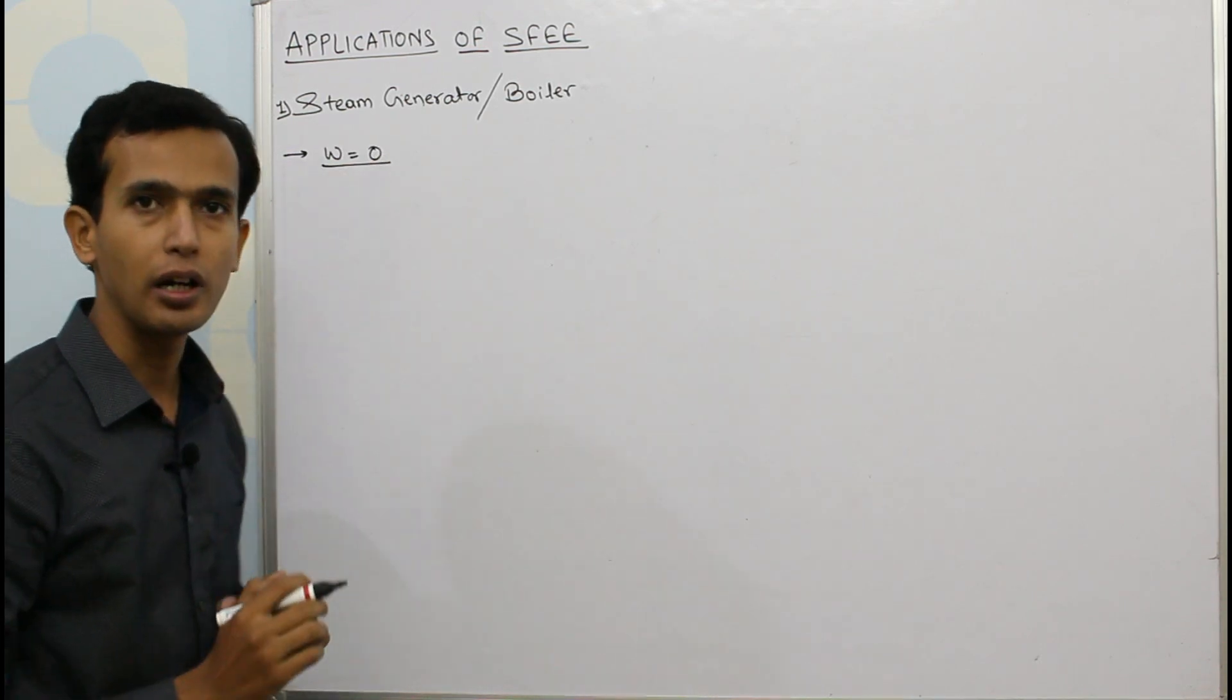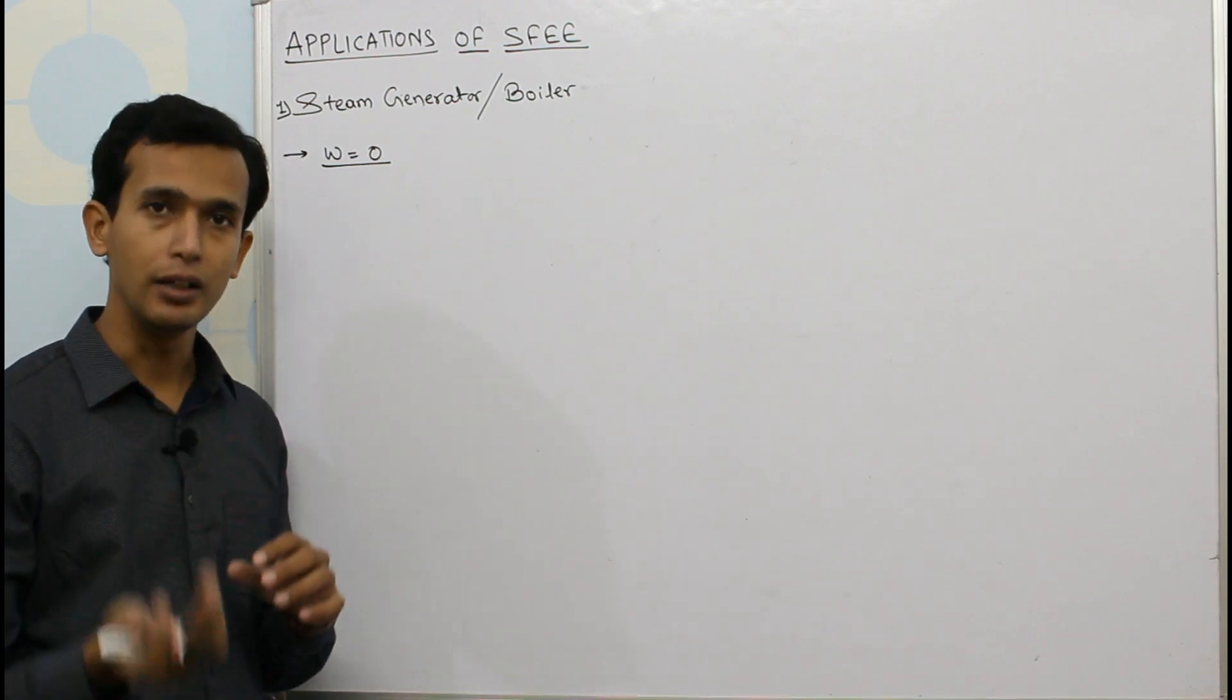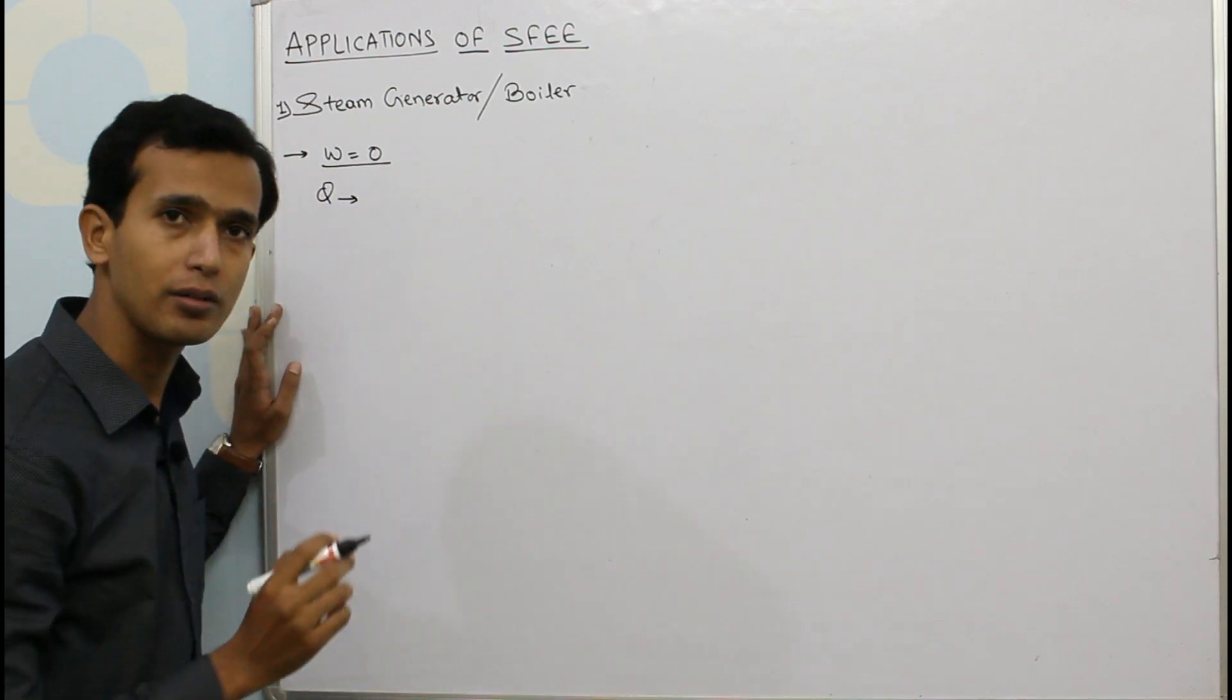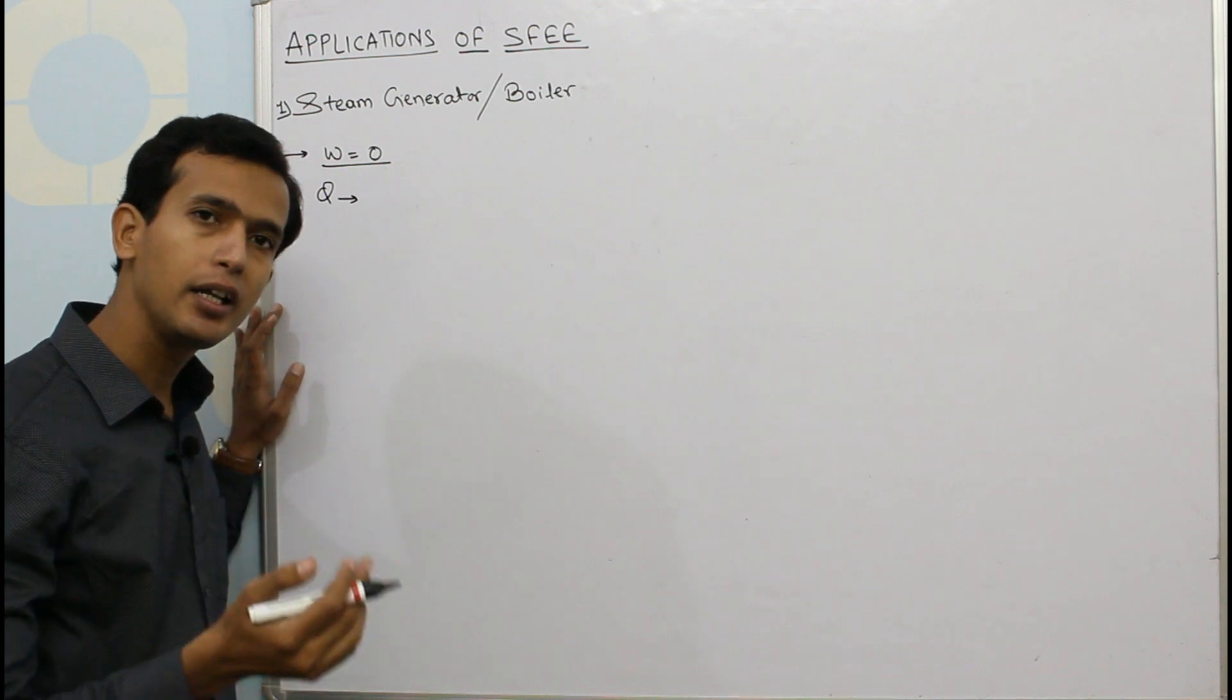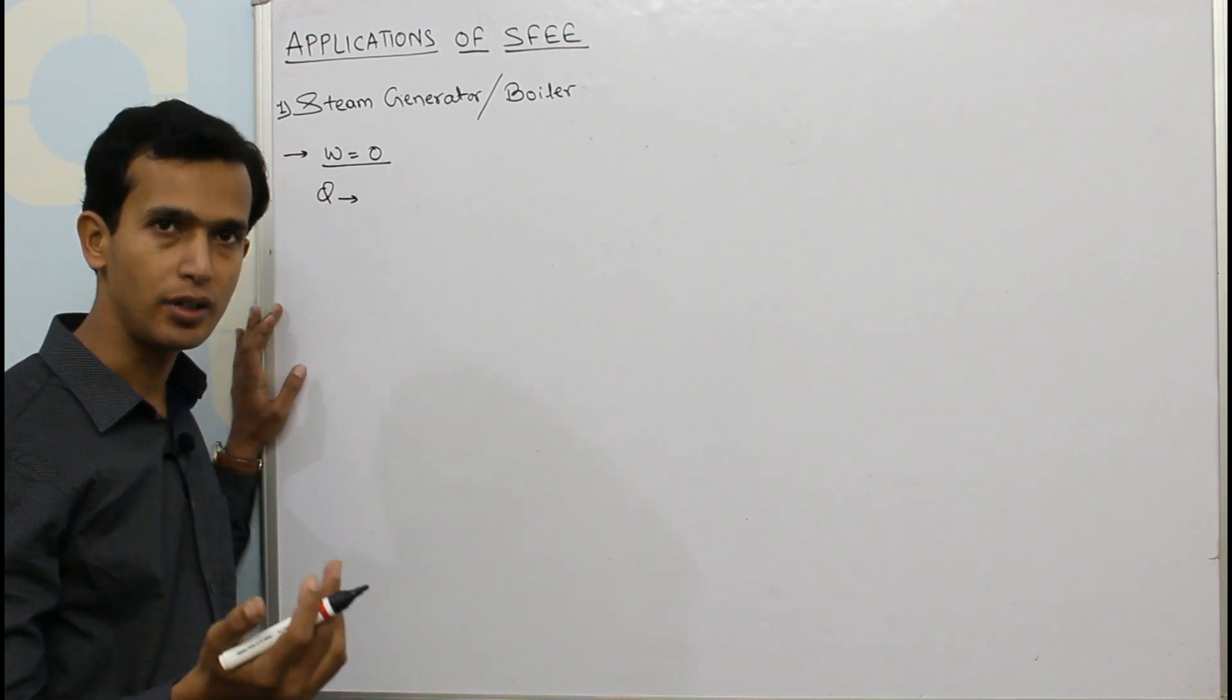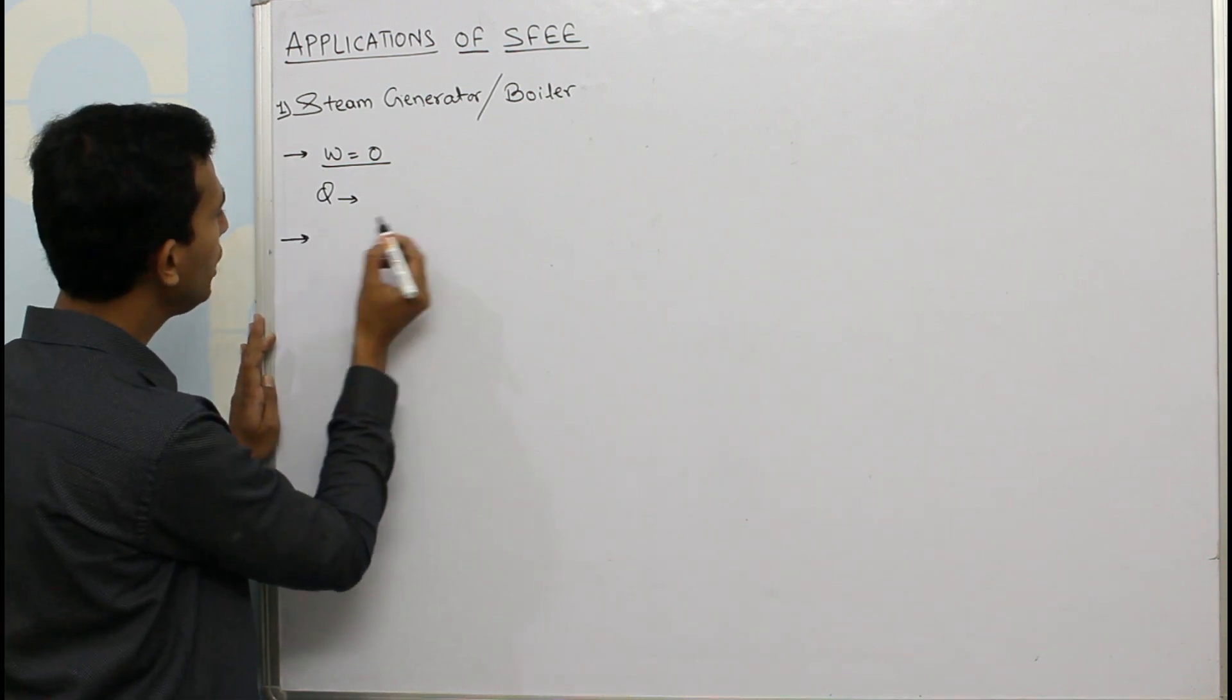Work is neither supplied nor delivered, whereas Q, there is Q interaction—heat is supplied in order to convert that feed water into dry and saturated steam. So as a general form of steady flow energy equation...